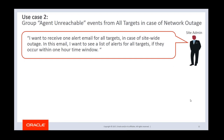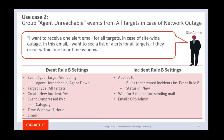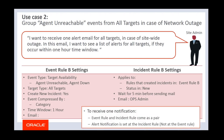Another use case: a data center site administrator wants to receive only one email alert when there is a site-wide outage and all of his targets go down. He doesn't want hundreds of emails coming into his mailbox, but he still wants to have a list of targets affected by the outage. He can do this by creating an event rule to group agent-unreachable events from all targets in the data center. Again, the two key points: event rule and incident rule have to come as a pair, and alert notification should be set at the incident rule side, not the event rule side. Those are the two points in common when configuring notification with compression.